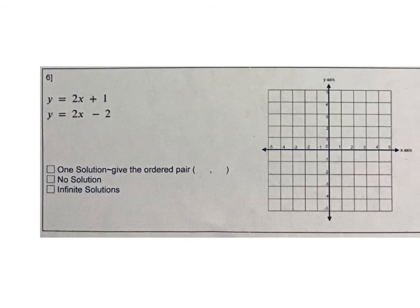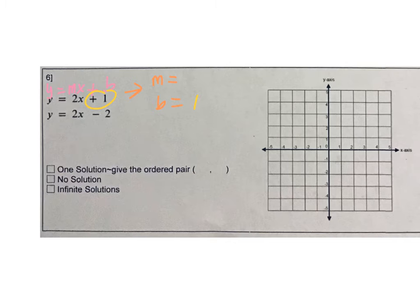Next set. Y equals MX plus B — I always like to write that as my reminder. Begin at the B. For this equation, the B is positive 1 and the M is 2 over 1, or 2. Begin at positive 1 and put a point. Now rise 2 and run 1, put another point, and continue that pattern — rise 2, run 1. Then reverse it: drop 2, go back 1 repeatedly. Our first equation is done — connect those points to make a line.